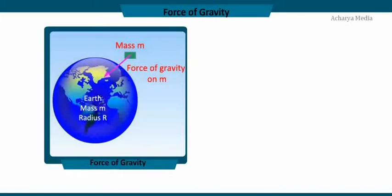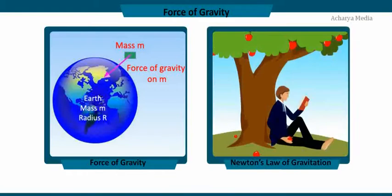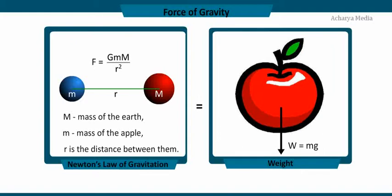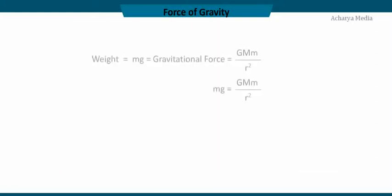The force of gravity on mass m is by definition its weight. Thus the gravitational force on an apple equals the apple's weight, mg, where g equals 9.8 m/s². By Newton's law of universal gravitation, F equals G·M·m divided by r squared. Equating both equations and cancelling terms, we get g equals G·M divided by r squared. Thus, the value of acceleration due to gravity g is independent of the mass m of the body — whether it is a feather, a coin, or a stone.